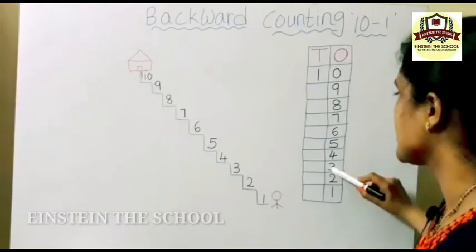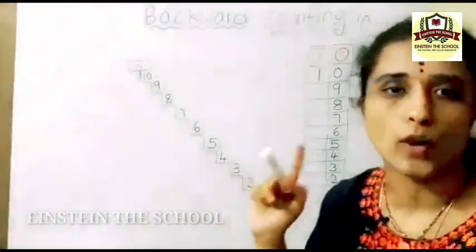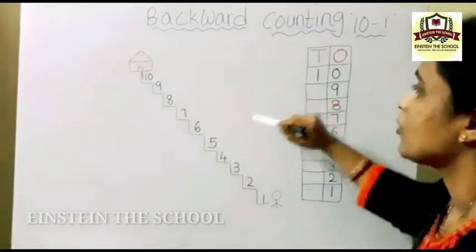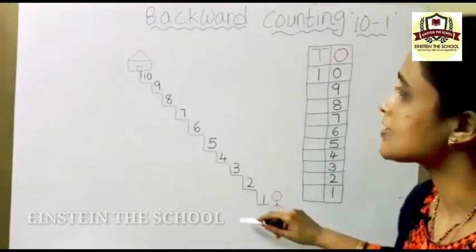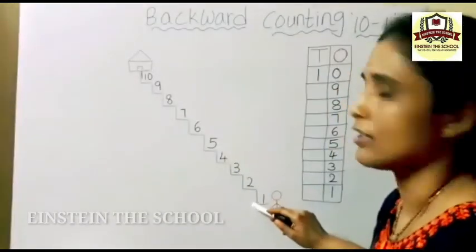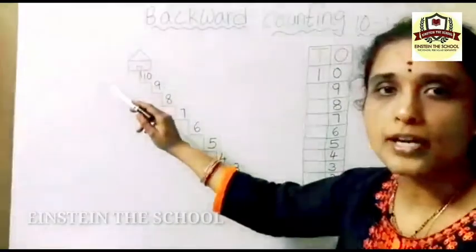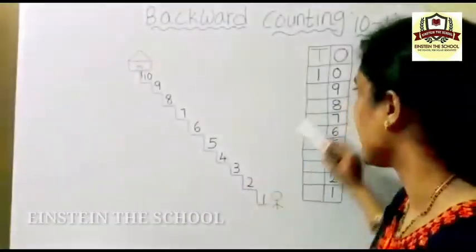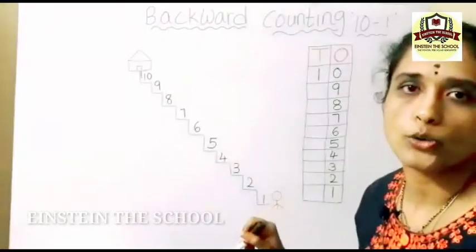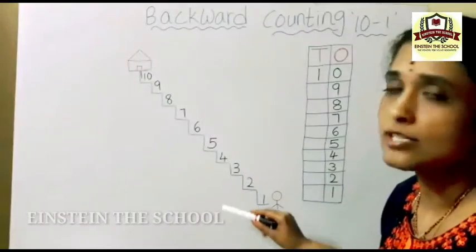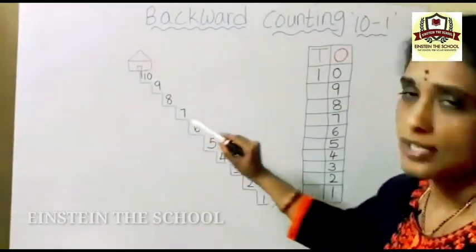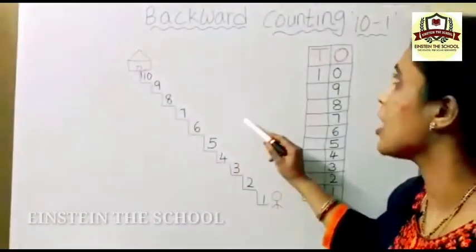Whereas 9, 8, 7, 6, 5, 4, 3, 2, 1 — all are single digit, one digit numbers, so we are writing them under the ones place. What is backward counting, children? Again: from bigger number to smaller number. Writing numbers from big number to small number is called backward counting or reverse counting.